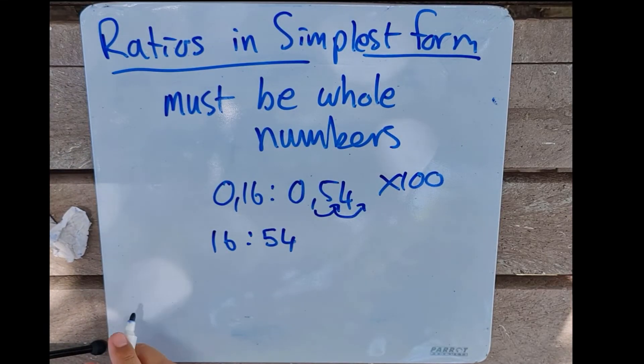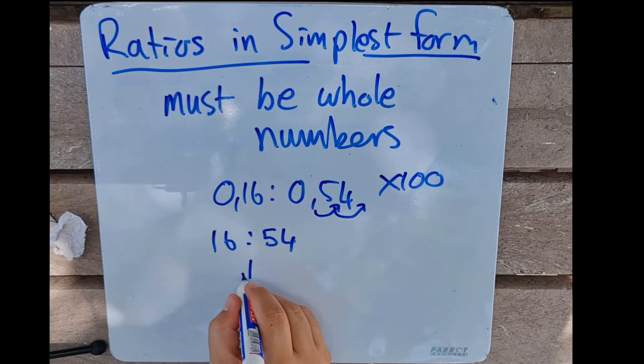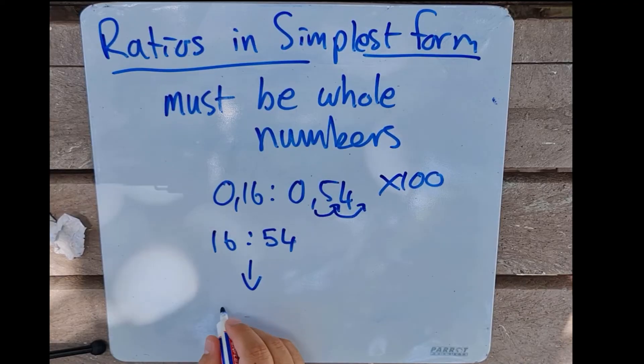And again, if I bring that down to my simplest form, that is going to end up being a ratio of 8 to 27.